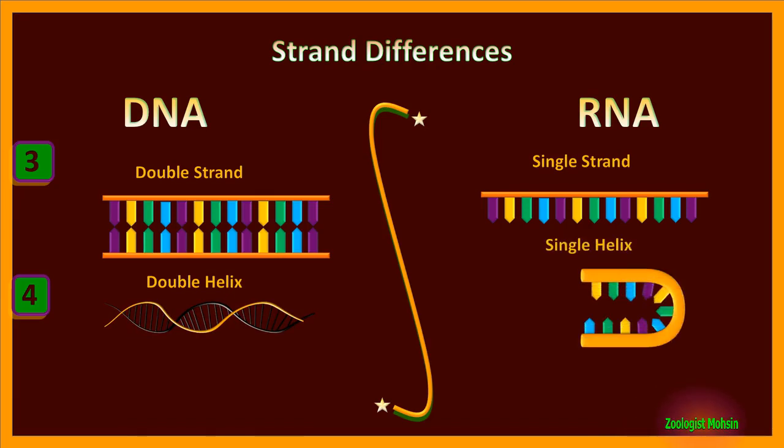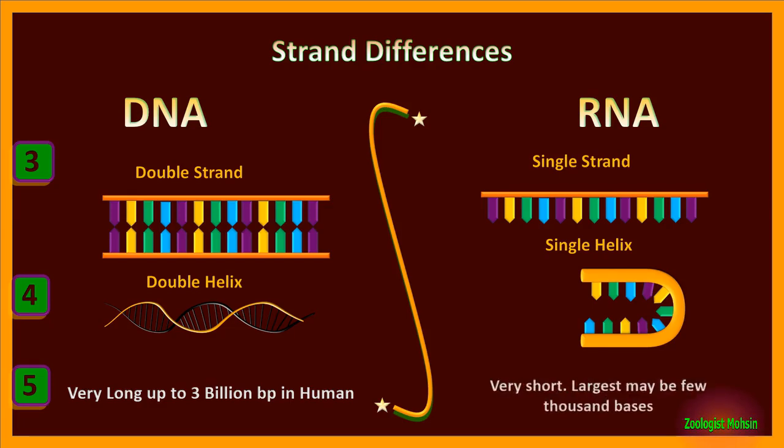And can wrap with each other to fold. Number five: DNA molecule is very long, up to three billion base pairs in humans, while the strands of RNA are very short as compared to DNA - largest may be a few thousand bases only.